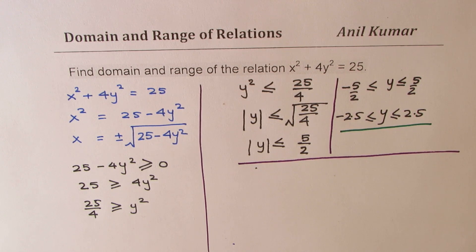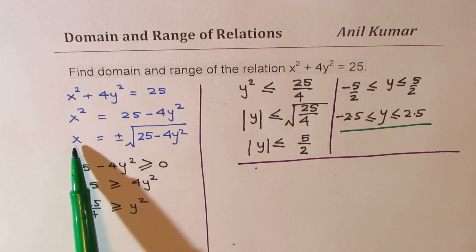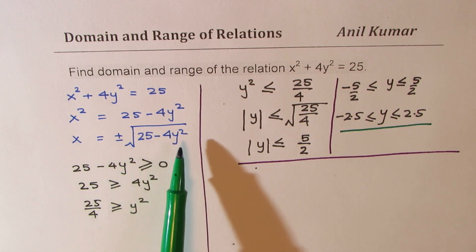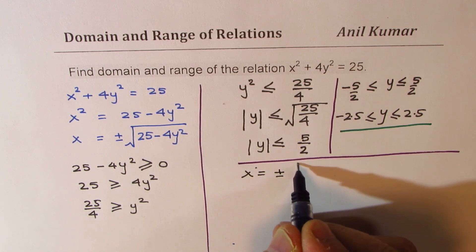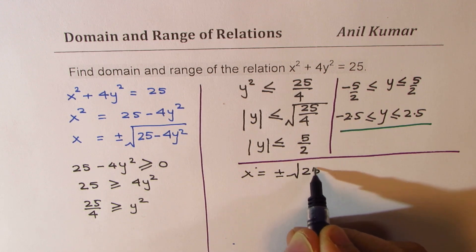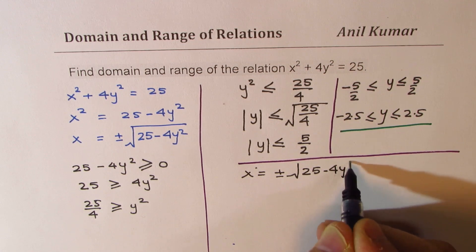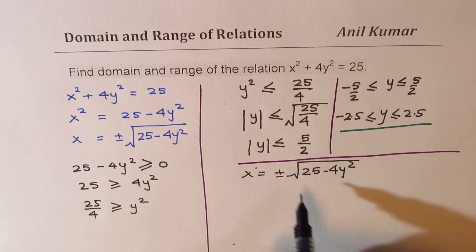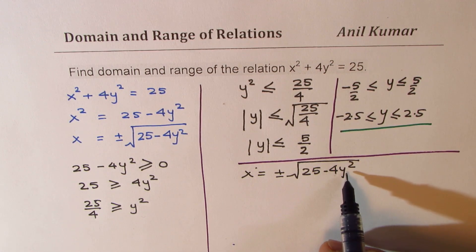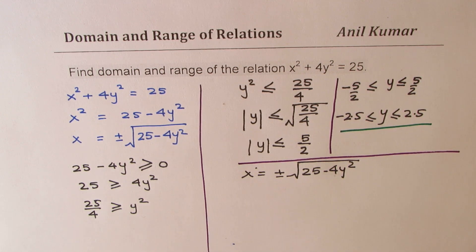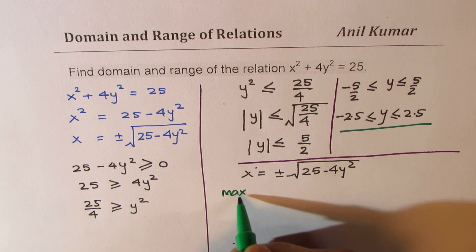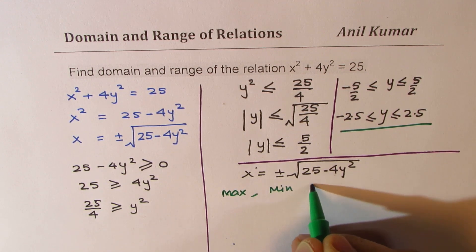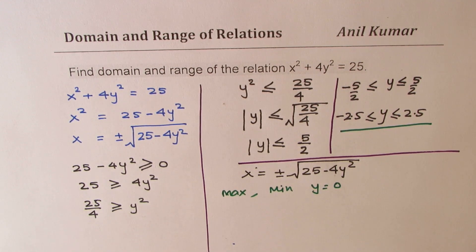Now, let's look into the x value. If you look into this expression, x = ±√(25 - 4y²), the maximum value and the minimum value is when y = 0.